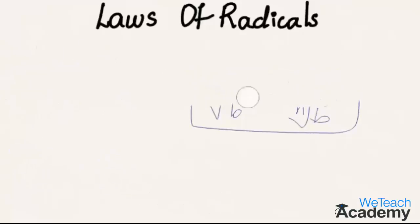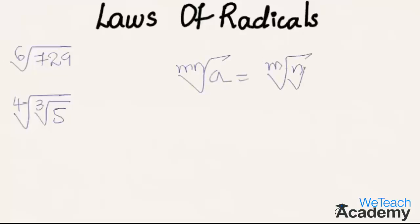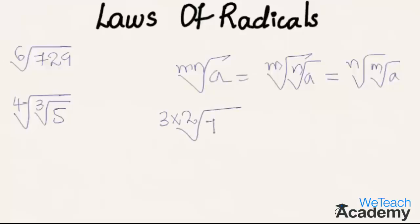Now let us proceed and write two more examples using the laws of radicals. The next example is the 6th root of 729. Using the law that the mn-th root of a equals the m-th root of the n-th root of a, which also equals the n-th root of the m-th root of a, we can write the 6th root of 729 as the 3 times 2 root of 729.